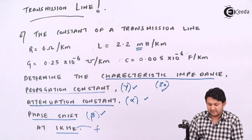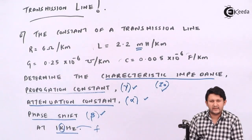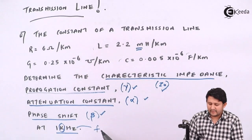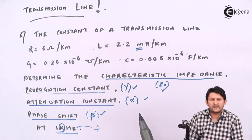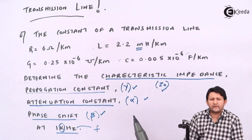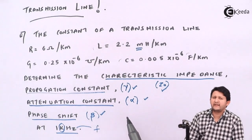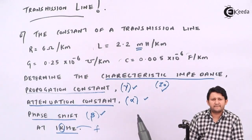The frequency is 1 kilohertz, which means f = 10³ Hz. Beyond finding Z0, γ, α, and β, we will also find two more variables: wavelength λ and phase velocity vp. So we will be finding all these parameters step by step — just remember the basic formulas and put in the values.